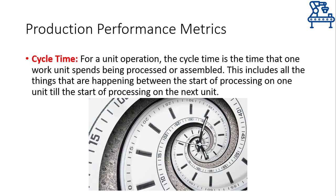The first metric I'm going to discuss is cycle time. This is the time required for a work unit to be processed and assembled on a workstation. This time includes the time from the arrival of the work unit on the machine till the arrival of the next work unit on the same machine. Therefore, the machine cycles through this time and in each cycle, it finishes processing on one work unit.